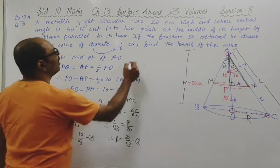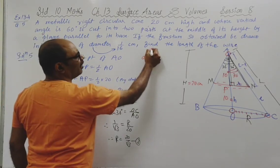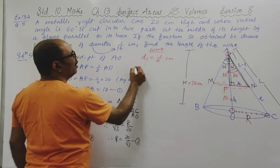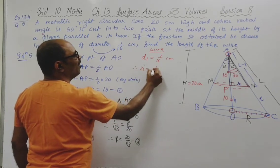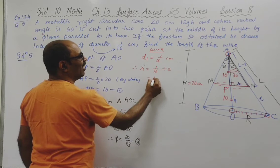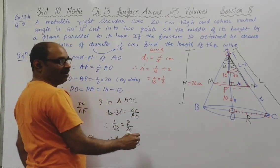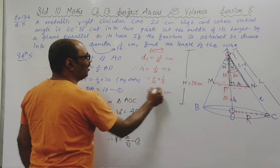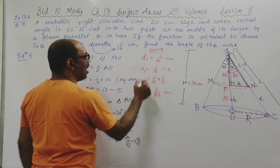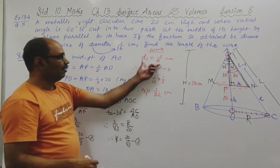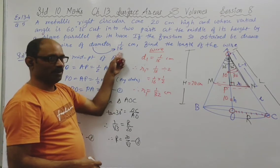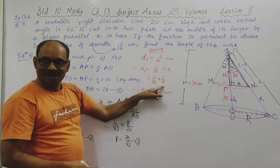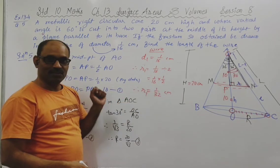Diameter of wire D1 is 1 upon 16 centimetre. Therefore radius R1 equals 1 upon 16 divided by 2, which equals 1 upon 16 multiplied by 1 upon 2, giving R1 equals 1 upon 32 centimetre.